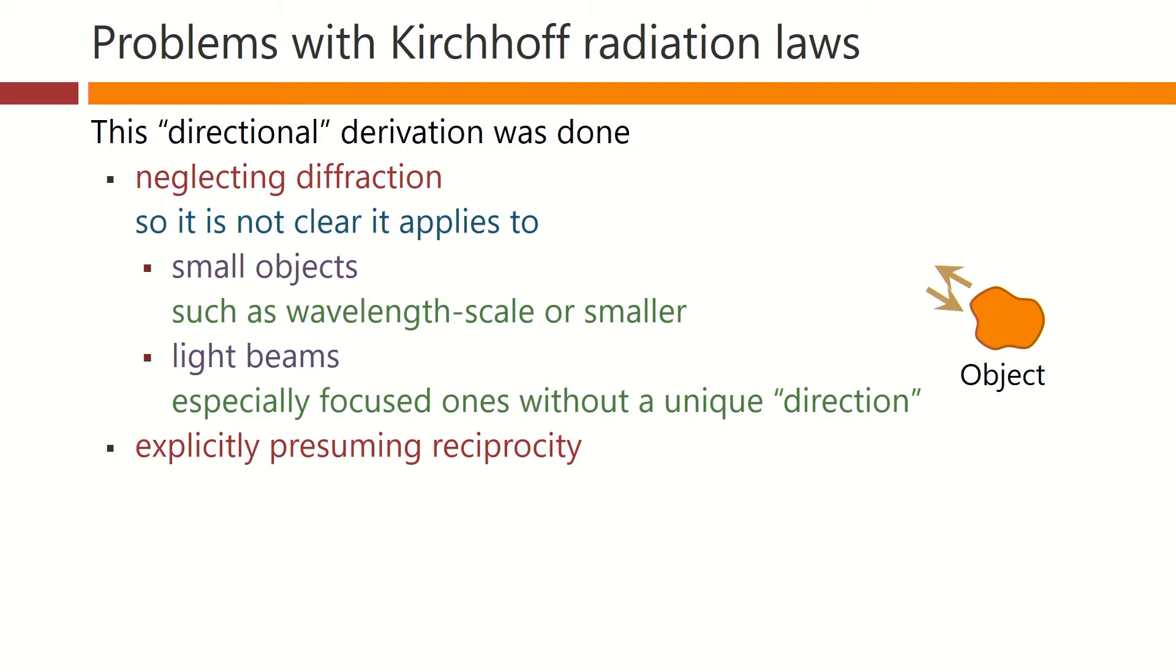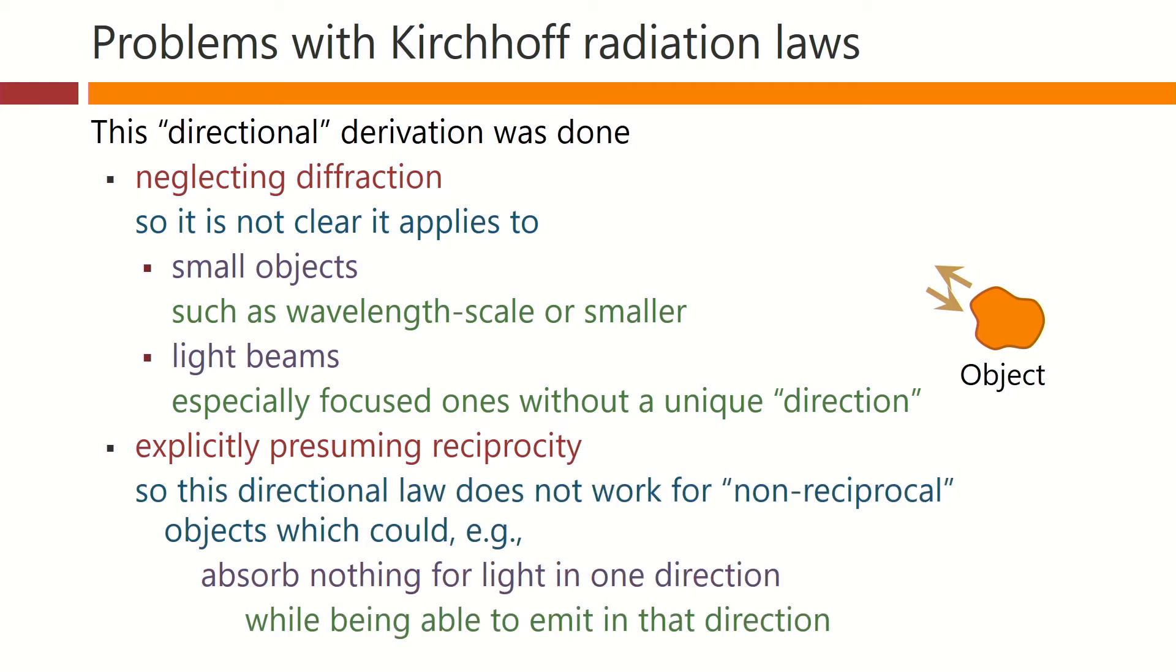And it was also done explicitly presuming reciprocity. Now, most optical systems are reciprocal, but not all of them are. So this directional law does not work for non-reciprocal objects, which could, for example, absorb nothing for light in one direction, while being able to emit in that direction.